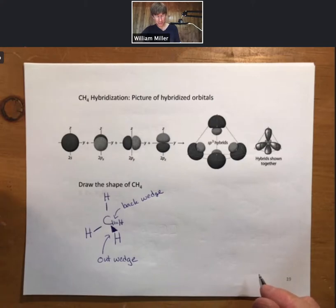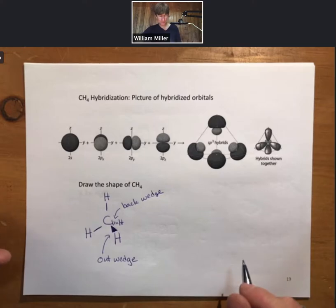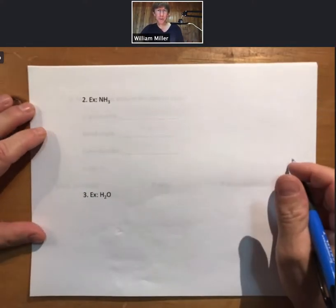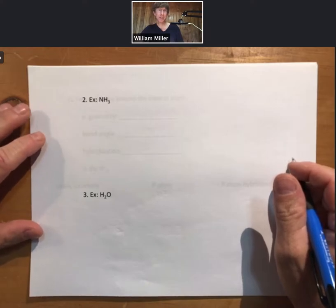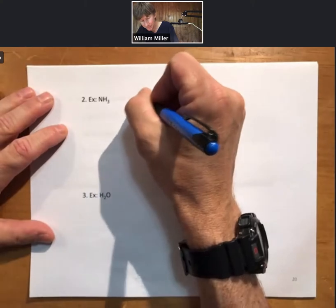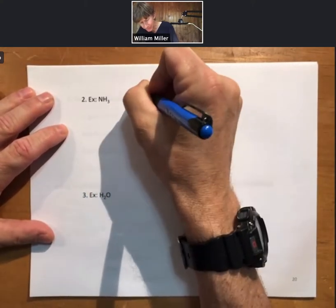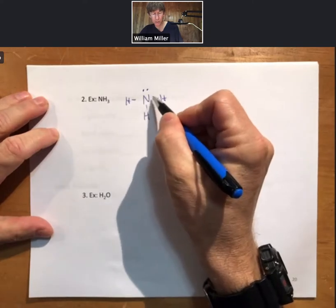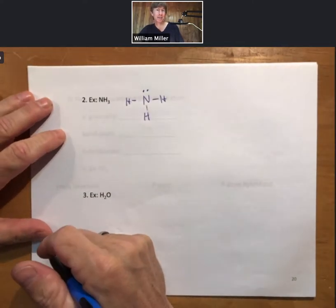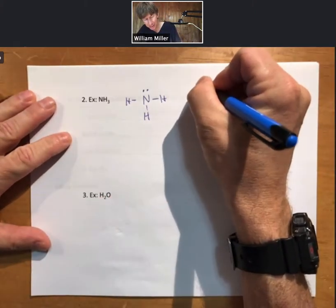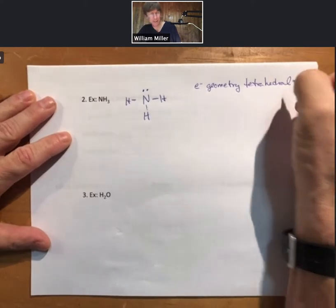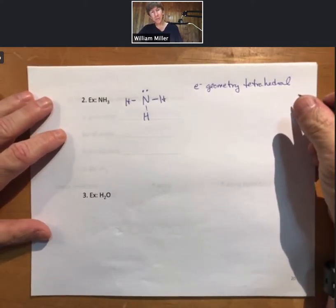We will not do the orbital overlap diagram — it gets increasingly complicated in three dimensions. Other examples: two more key examples of tetrahedral electron geometries are NH3 ammonia and water. If we draw the Lewis structure for ammonia, it would have one, two, three, four electron groups. Remember, a lone pair of electrons counts as an electron group. That means this is electron geometry tetrahedral, with sp3 hybridization and bond angles of 109.5 degrees.